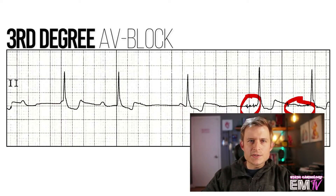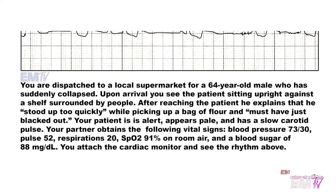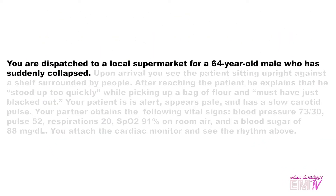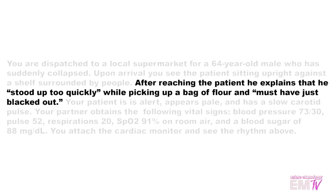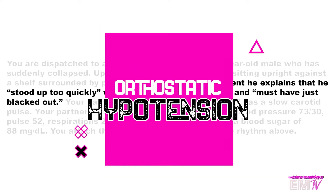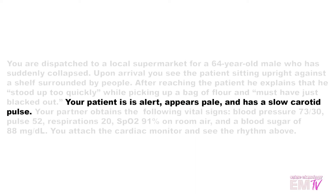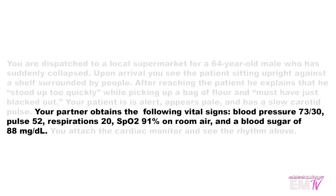Now let's take a look at the scenario. You're dispatched to a local supermarket for a 64-year-old male who has suddenly collapsed. He explains that he stood up too quickly while picking up a bag of flour and must have just blacked out. Standing up too quickly and feeling faint or dizzy can be the result of orthostatic hypotension, but his heart rhythm doesn't paint the picture of a simple orthostatic hypotension. Your patient is alert, but he appears pale and has a slow carotid pulse. Your partner obtains the following vital signs.